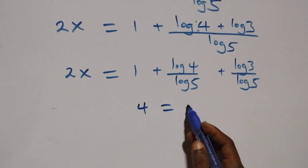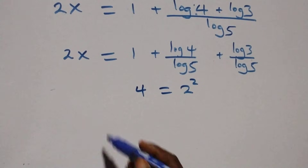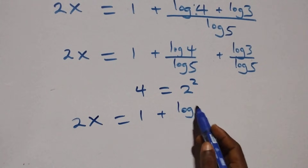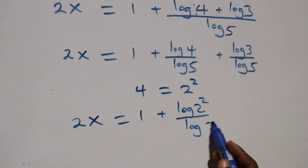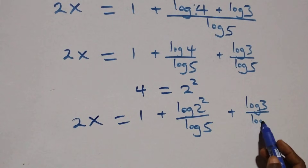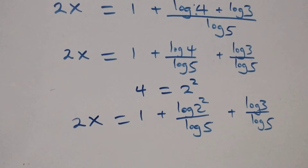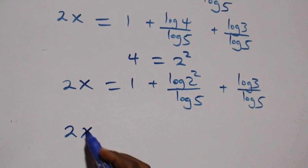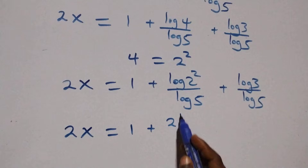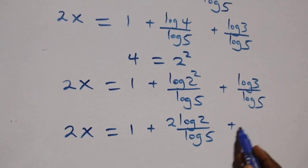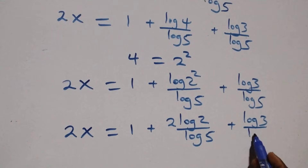We write 4 as 2 times 2, which is 2 squared. This becomes 2x equals 1 plus log of 2 squared over log 5, plus log 3 over log 5. Applying the power rule of logarithms, the 2 comes down, giving 2x equals 1 plus 2 log 2 over log 5, plus log 3 over log 5.